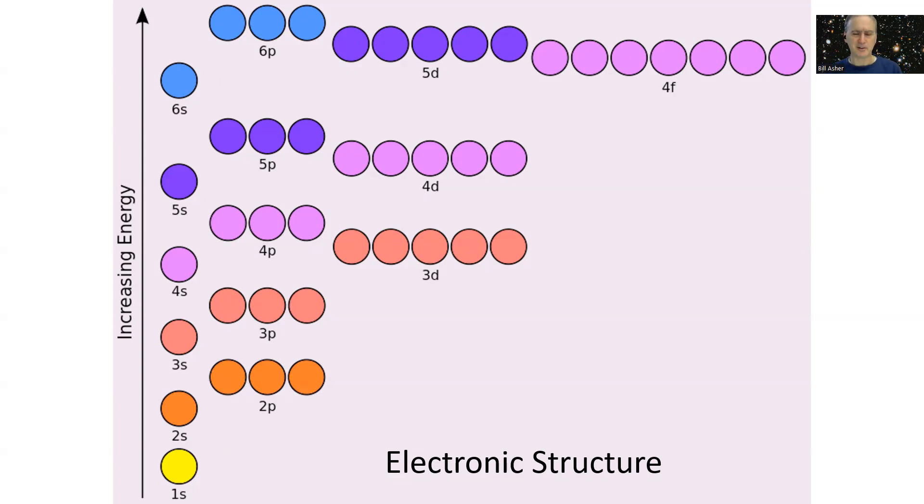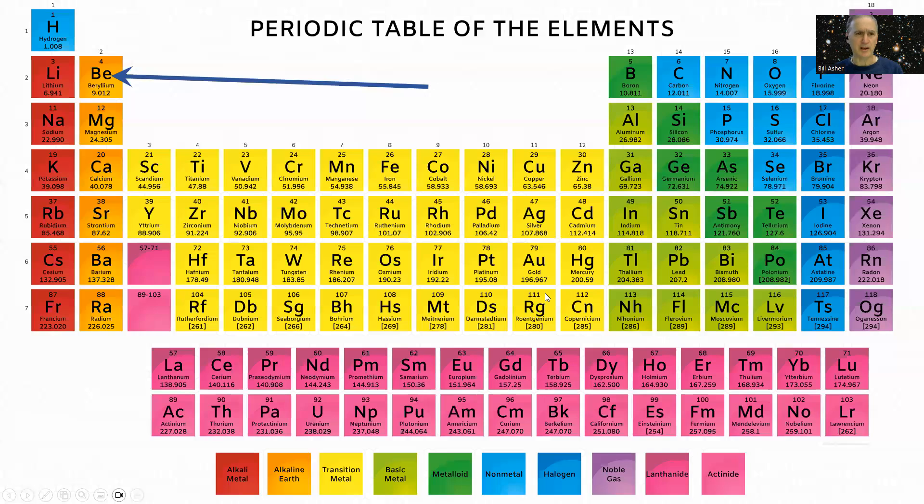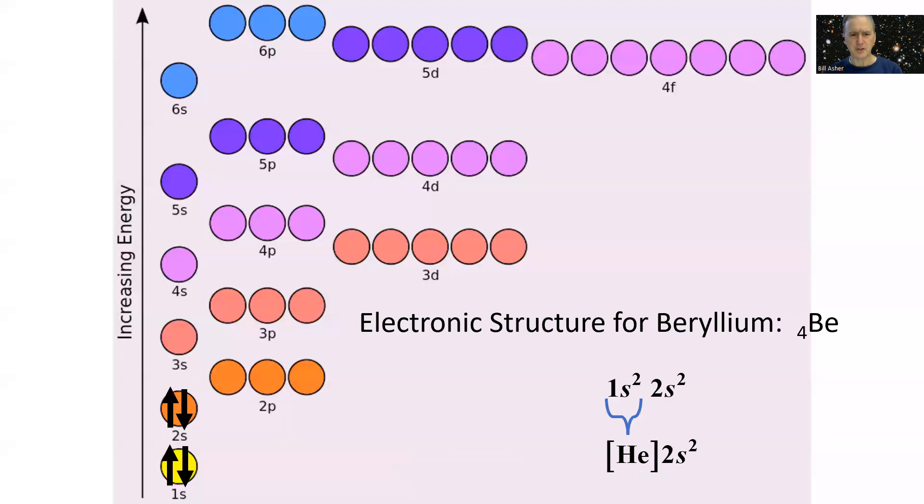We'll do a bunch of examples and hopefully you get the idea. The first atom we're going to look at is beryllium. It has atomic number four, which means it has four protons, and a neutral atom will have four electrons. Following the Aufbau principle, they're going to populate from lower energies up to higher energies, pairing two electrons in each orbital.